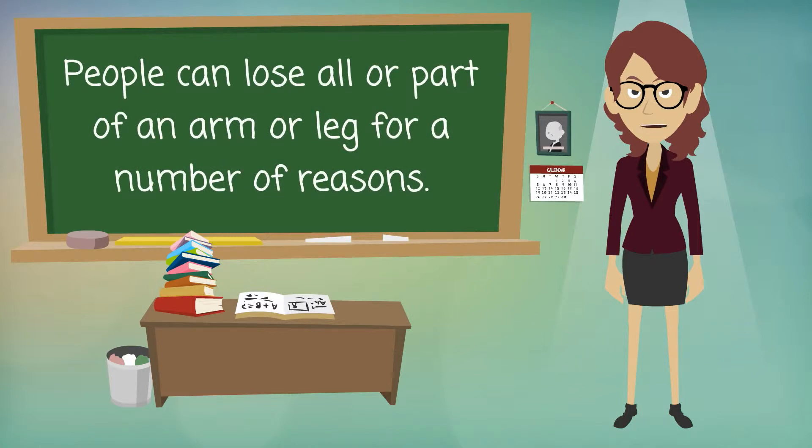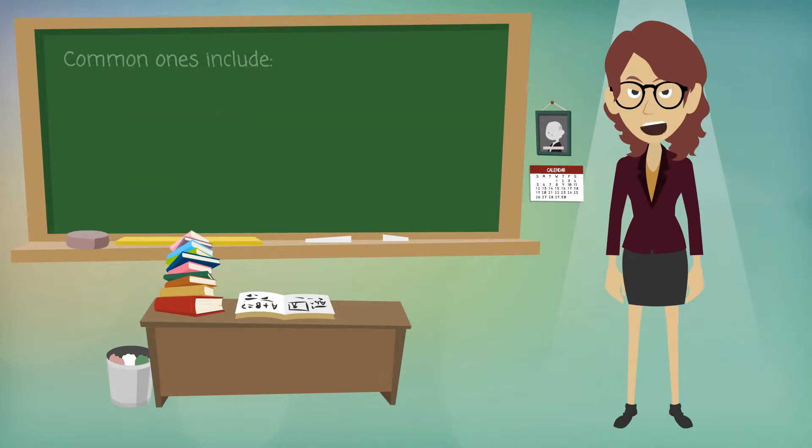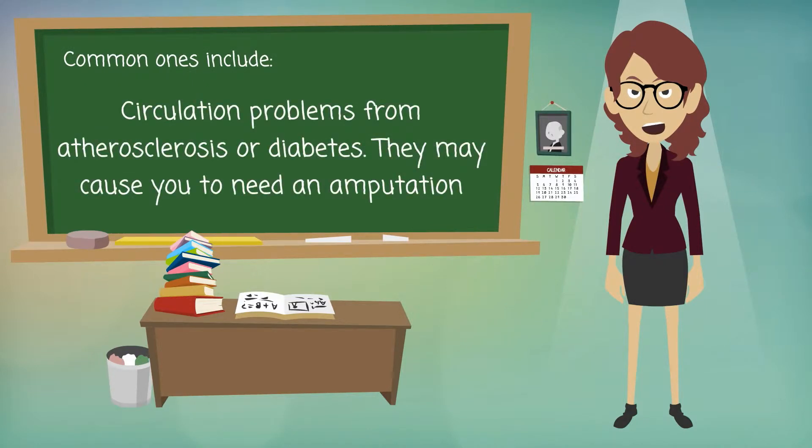People can lose all or part of an arm or leg for a number of reasons. Common ones include circulation problems from atherosclerosis or diabetes. They may cause you to need an amputation.